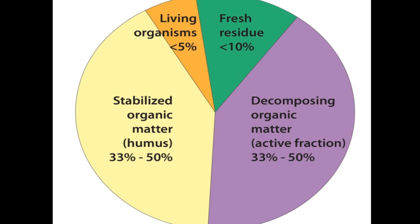The next one is stable organic matter. Stable organic matter includes complex organic compounds that remain after many organisms have used and transformed original organic material. Humus is not readily decomposed because it is either physically protected inside soil aggregates or chemically too complex to be used by most organisms. So stable organic matter constitutes humus.